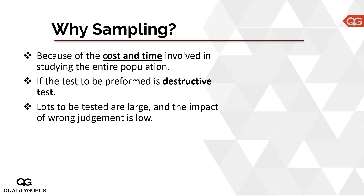The question is: why do we need sampling? Many times you cannot test or check everything, so you take a sample to save time and cost. If the population is too large, it's not easy to check the whole population. Also, if the test is a destructive test, you cannot test the whole population because you cannot destroy all those items. Instead, you take some samples, destroy those, and based on that you guess about the population.